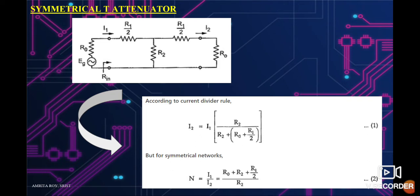The first one is the symmetrical T attenuator. In the given circuit, we can see that R0 is connected in series with R1/2, which is connected in parallel with R2. Again, the last two resistances R1/2 and R0 are connected in series with each other, which is connected in parallel with R2. So in the circuit, we have a total of 5 resistances, 1 supply voltage, and the current is dividing as I1 and I2.